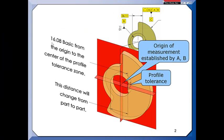So the 16.08 basic is from that axis, whereas that other dimension, the 36.11, would be coming from this spot on the surface of the datum feature, which is variable. So that would be wrong.